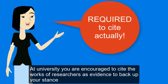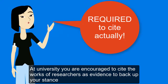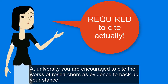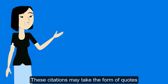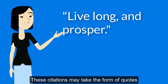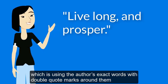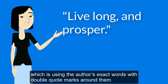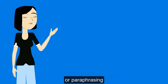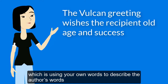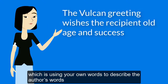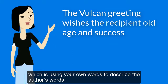At university, you are encouraged to cite the works of researchers as evidence to back up your stance. These citations may take the form of quotes, which is using the author's exact words with double quote marks around them, or paraphrasing, which is using your own words to describe the author's words.